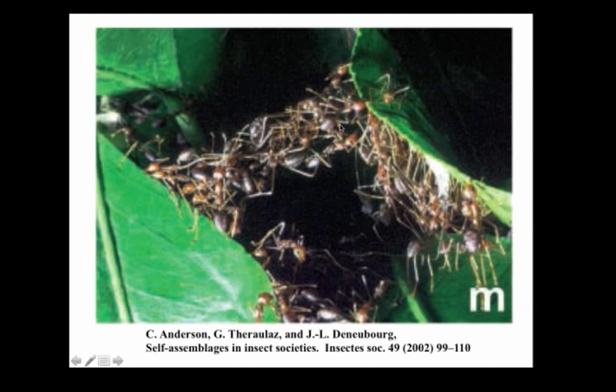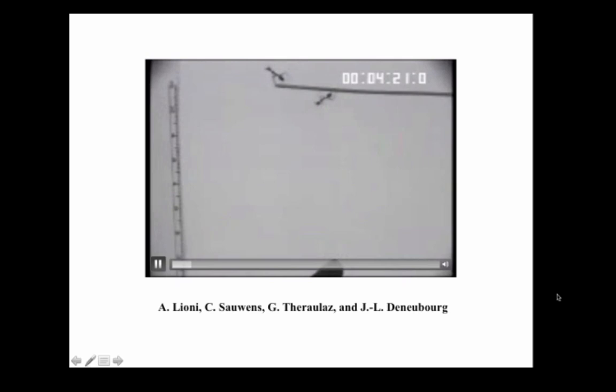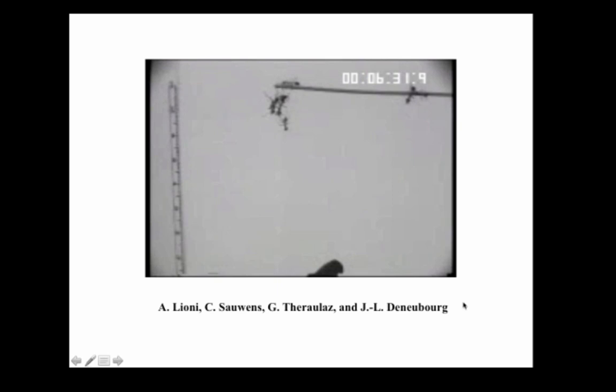Here's an example of ants building a bridge with their bodies so that other members of the ant colony can cross the gap between two leaves. This video shows ants assembling this kind of bridge — they start up at the top, come in on a stick, and gradually chain themselves all the way down to the ground. Each ant is secreting chemicals to communicate with the other ants, and the whole bridge is built without any central control. You might call this an example of a decentralized, self-organizing or self-assembling system.